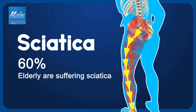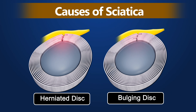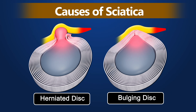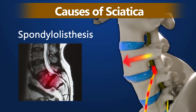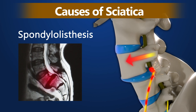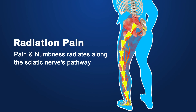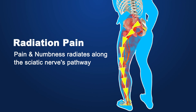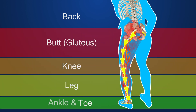Sciatica is one of the most prevalent mechanical issues affecting the adult. It typically occurs when a herniated or bulging disc compresses the nerve roots in the lumbar spine. Another common cause is spondylolisthesis, a condition where one vertebra slips forward, leading to nerve root compression. This compression can result in pain or numbness that radiates along the sciatic nerve's pathway, extending from the back to the butt, knee, leg, ankle, and toe.